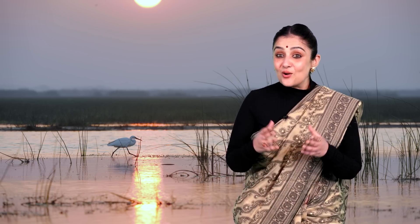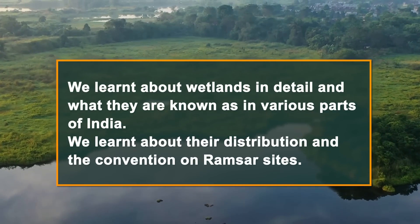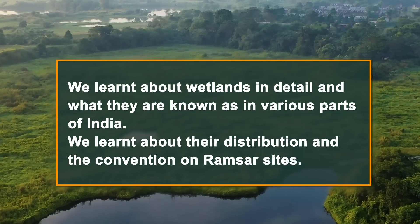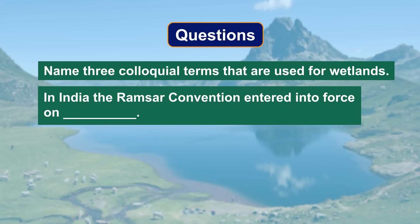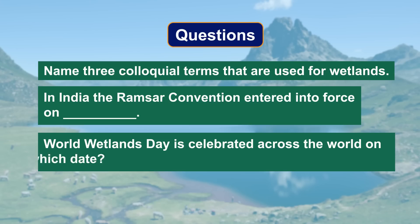World Wetlands Day is celebrated worldwide on 2nd February. India has designated 75 wetlands as Ramsar sites, also known as the Amrit Dharohar. In this session, we learnt about wetlands in detail, their names in various parts of India, their distribution, and the Ramsar Convention. Now let us try to solve a few questions: name three colloquial terms used for wetlands; on which date did the Ramsar Convention enter into force in India; and on which date is World Wetlands Day celebrated?